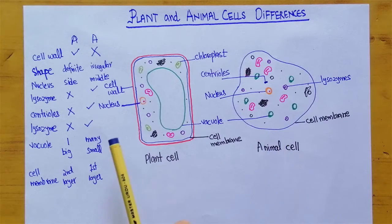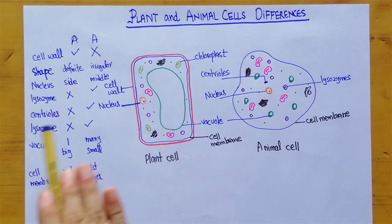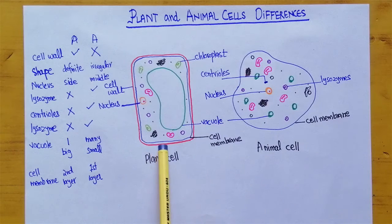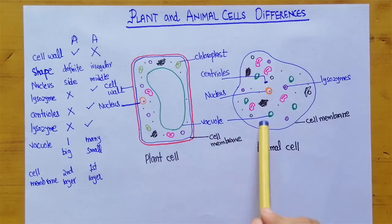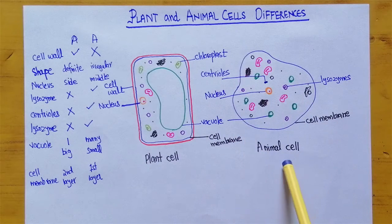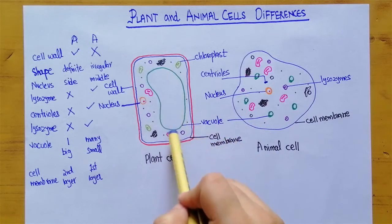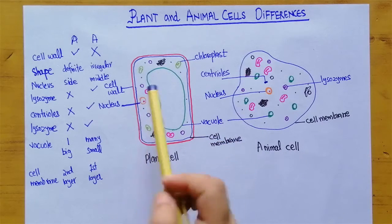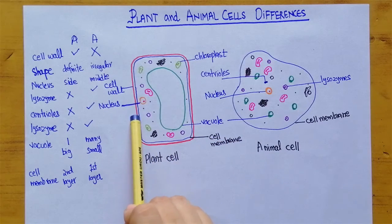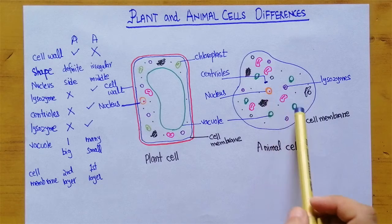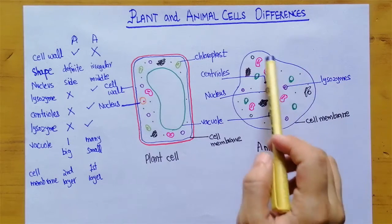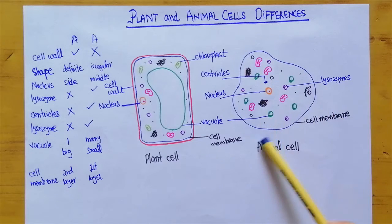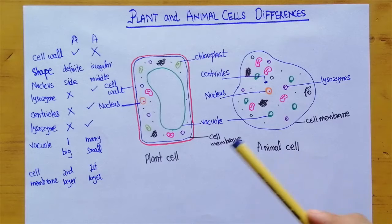So these are the basic differences we can use to identify which cell is plant and which is animal. If a cell has a defined shape with the nucleus at the side and one big vacuole, it must be a plant cell. If the nucleus is in the middle and there are many small vacuoles, it must be the animal cell.